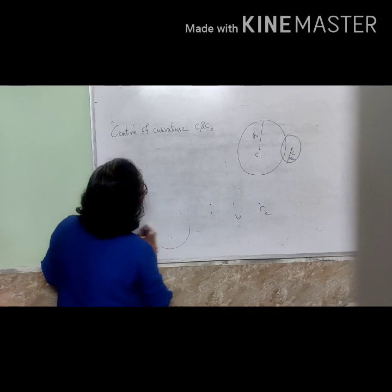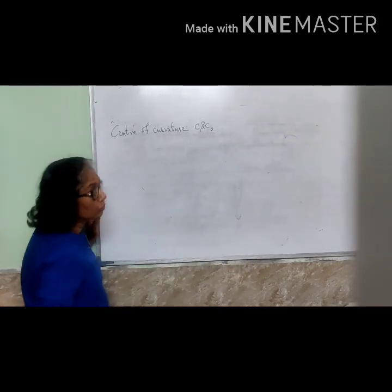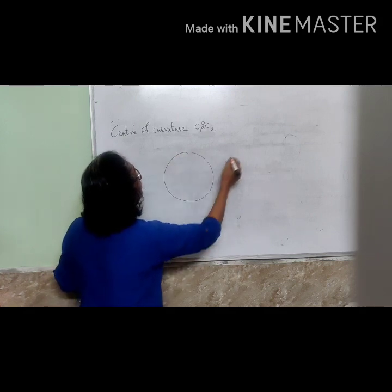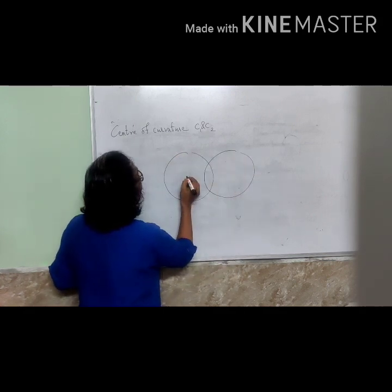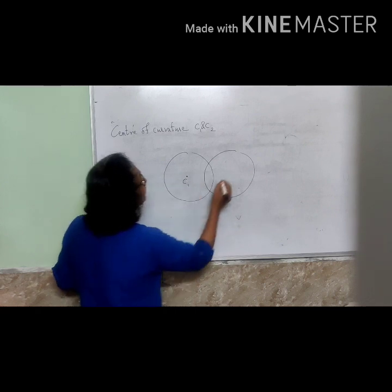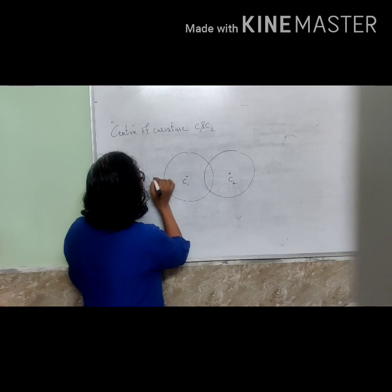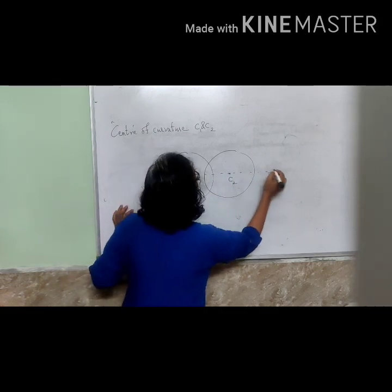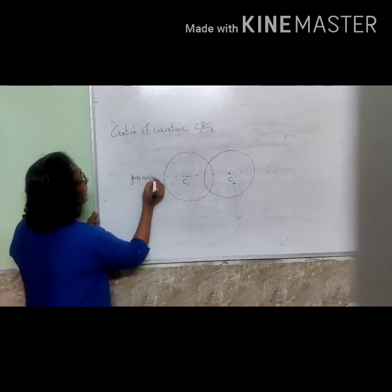Two centers of curvature and two radii of curvature for each lens. Now we come across the principal axis. It is an imaginary line that passes through the two centers of curvature C1 and C2. The imaginary line passing through C1 and C2 is known as the principal axis.